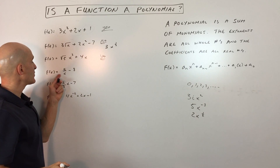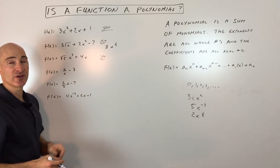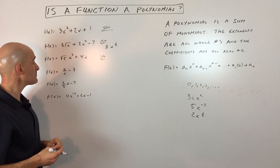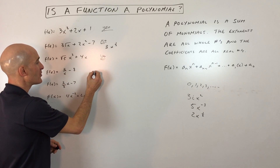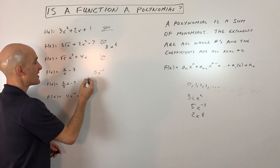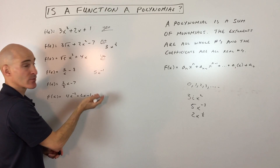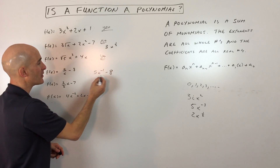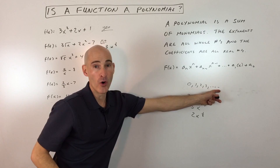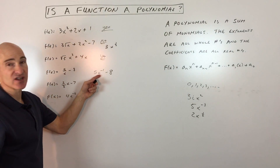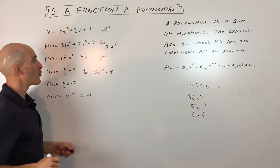This one: f(x) = 5/x - 8. Is that a polynomial? When you see that x in the denominator, you can rewrite this as 5x to the negative 1, because a negative exponent moves the variable to the denominator. And negative 1 is not a whole number, so this is not a polynomial.